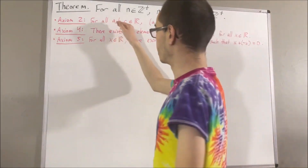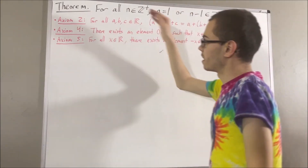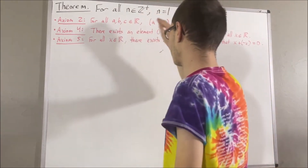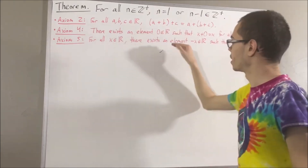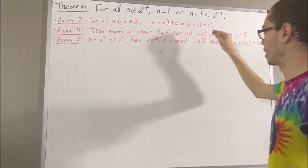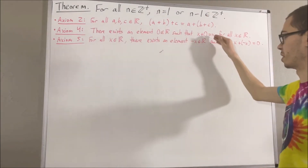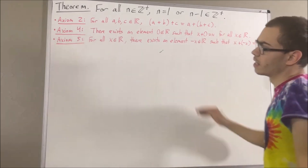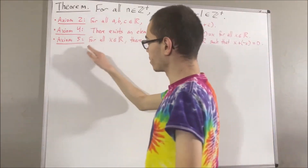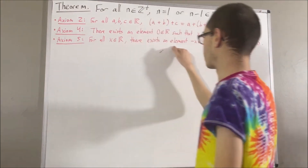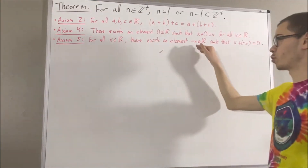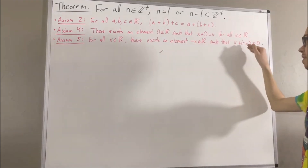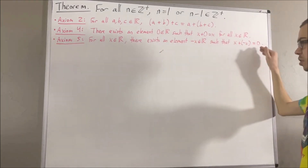Axiom 2 is just the associative law. Axiom 4 tells us that there exists a real number, which we call 0, that has the property that x plus 0 is equal to x, for all real numbers x. And axiom 5 tells us, for all real numbers x, there exists a real number, which we call the negative of x, that has the property that x plus the negative of x is equal to 0.